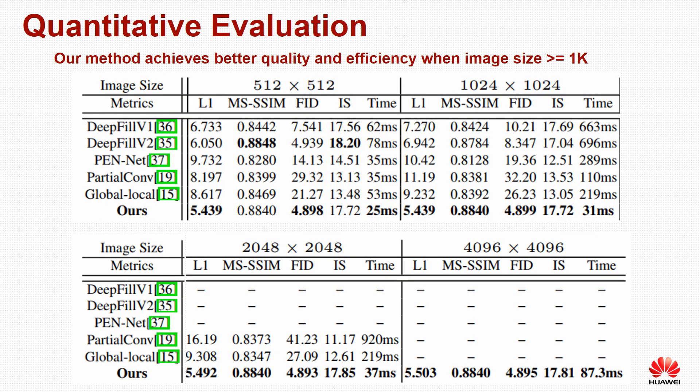We also conducted quantitative evaluation on all selected methods using four metrics to assess result quality, plus inference time per image as an indication of efficiency. We tested all methods on images of various sizes, ranging from 512 up to 4K. When tested on small images of 512x512, our method achieves comparable quality to the best prior art while being slightly faster.